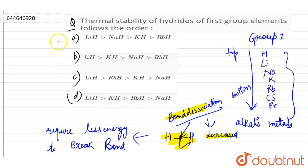Therefore, the correct option is A: LiH > NaH > KH > RbH. This is the correct order of thermal stability of hydrides of first group elements.